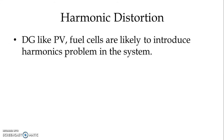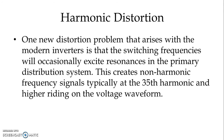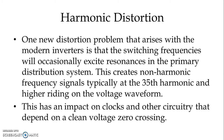Distributed generators like photovoltaic and fuel cells are likely to introduce harmonic problems in the system. Harmonics from distributed generators come from the inverters and some synchronous machines. One new distortion problem that arises with modern inverters is that the switching frequencies will occasionally excite resonance in the primary distribution system. This creates non-harmonic frequency signals, typically at the 35th harmonic and higher, riding on the voltage waveform, which has an impact on clocks and other circuitry that depends on a clean voltage zero crossing.